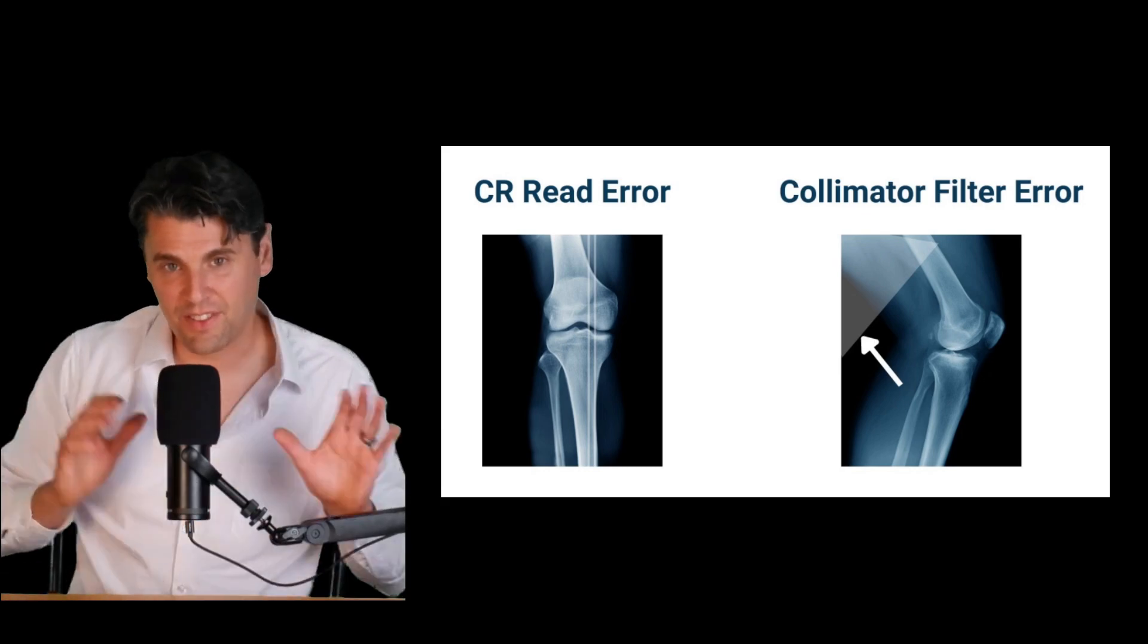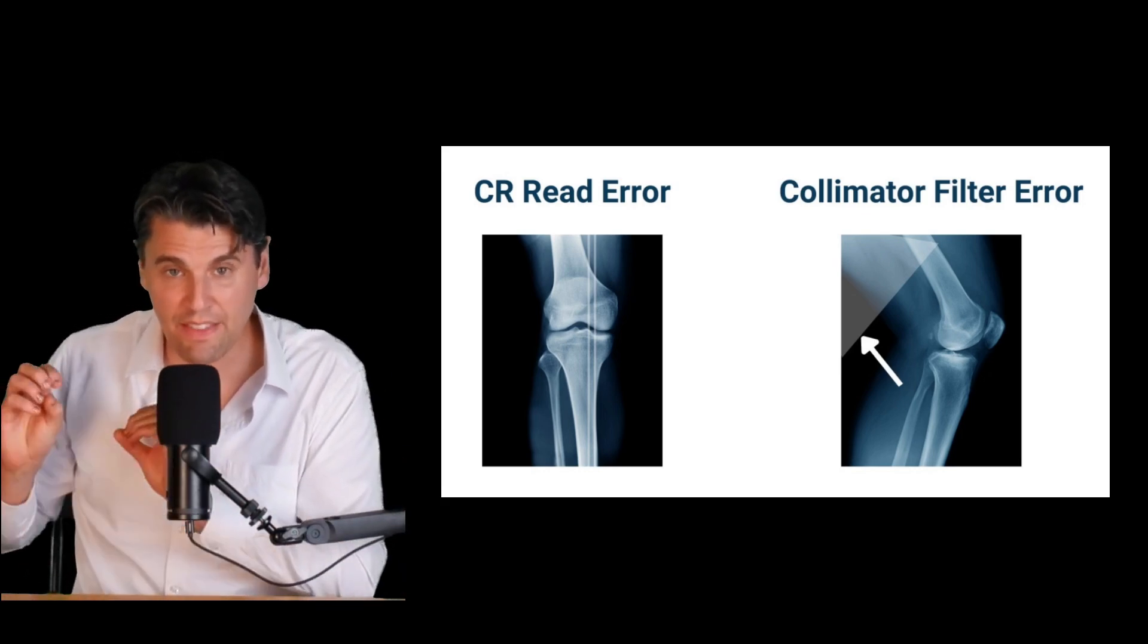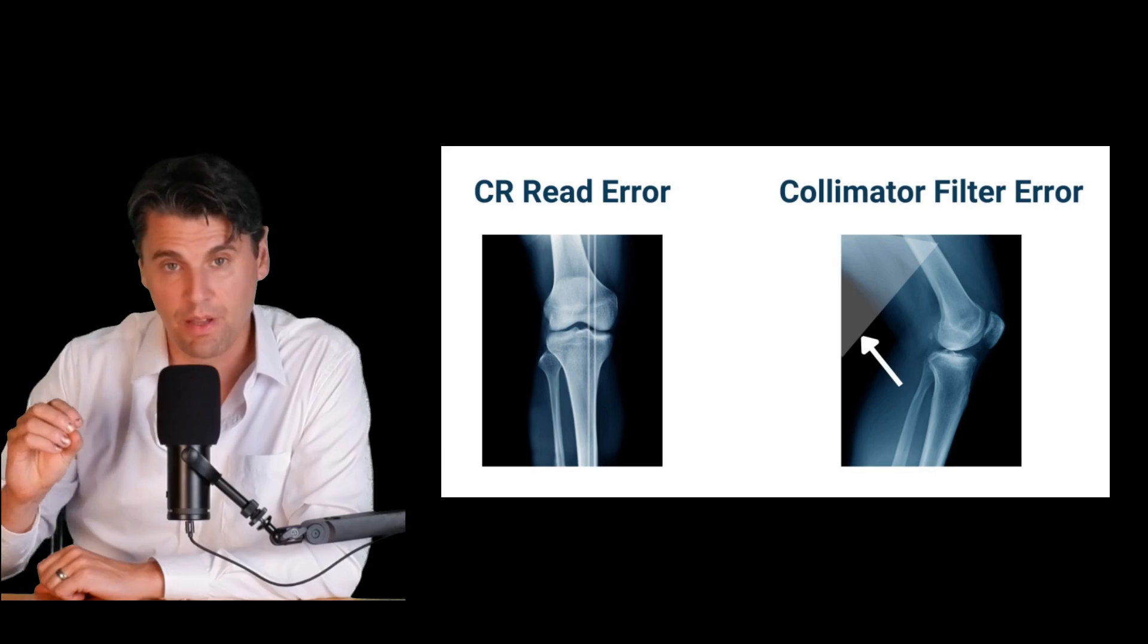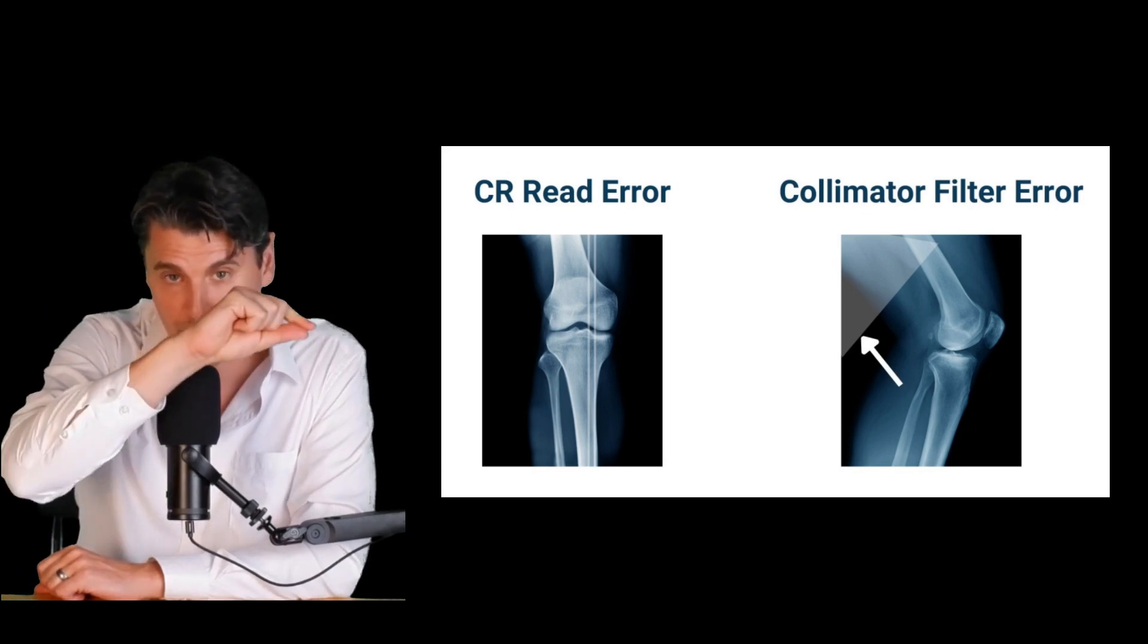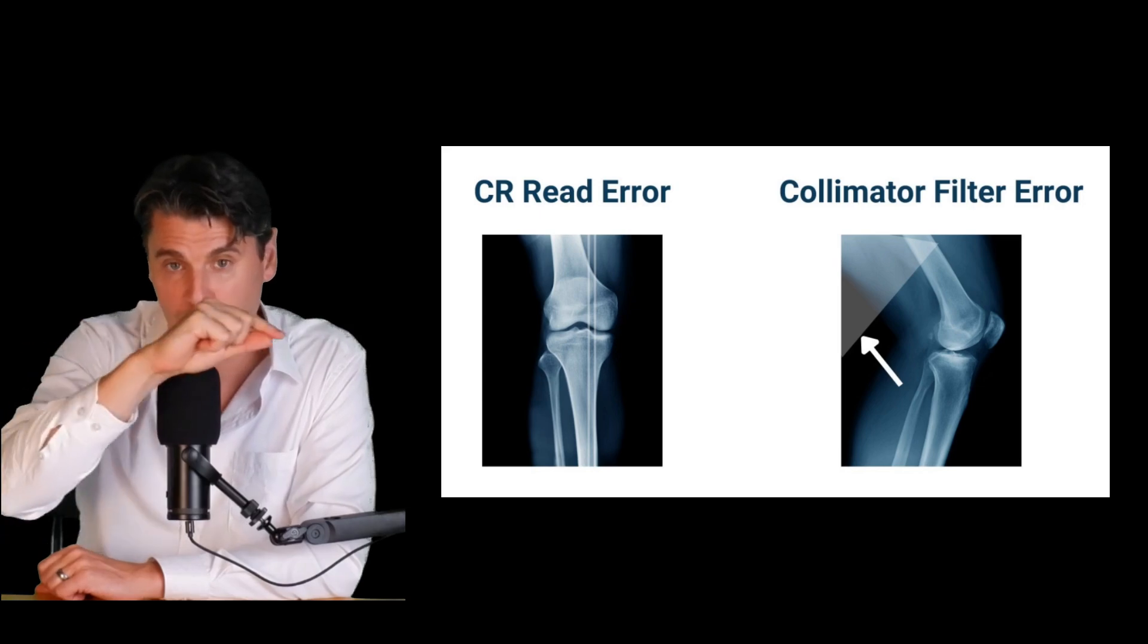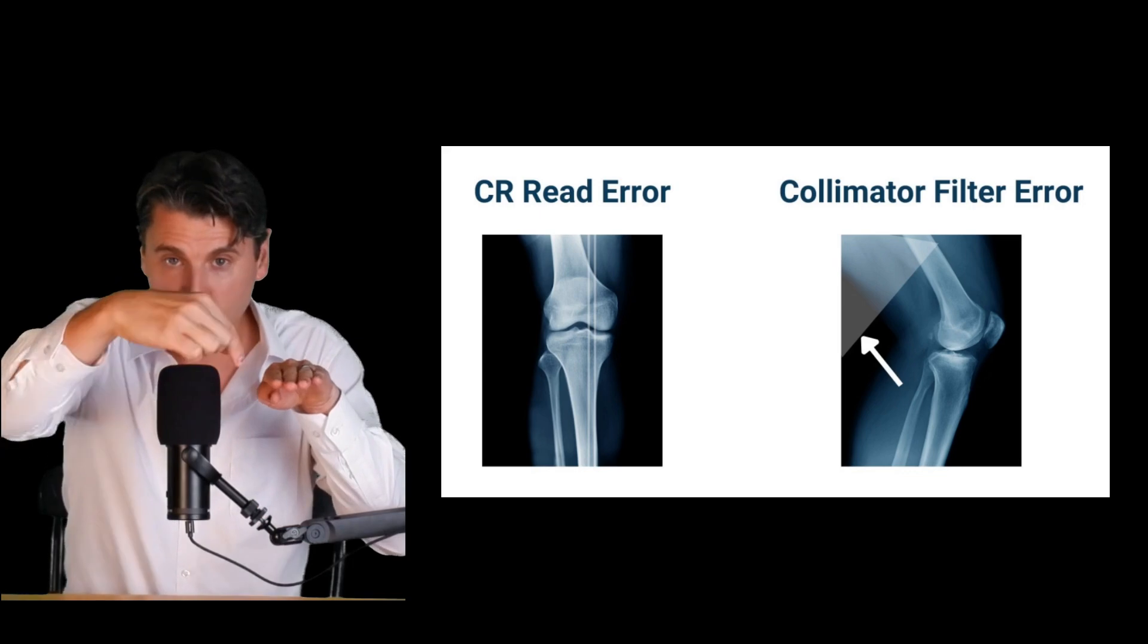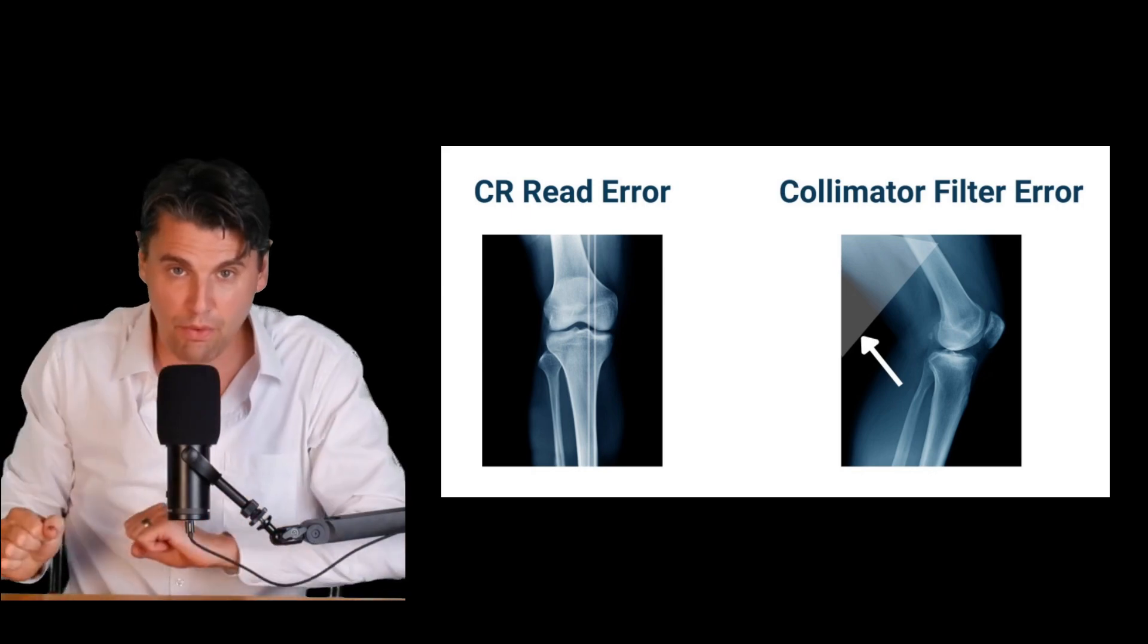Again on the CR side if you had an issue in the readout where for instance there was a problem reading out one of the rows, remember on a CR system you go across and you'll read out the panel then the whole panel will translate you'll read out another row the whole panel will translate you'll need to read out another row.